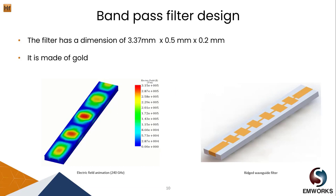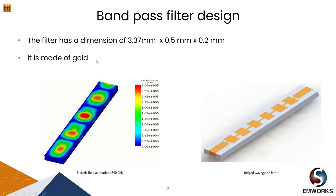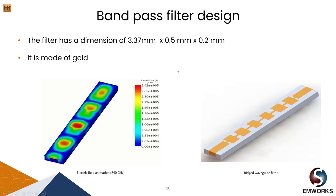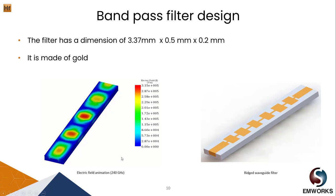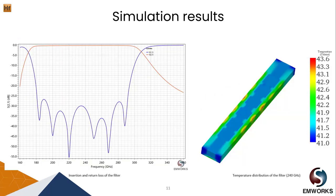Now let's look at the band pass filter. The filter is again physically small and made of gold. On the right we have a picture of the ridge waveguide filter, and on the left we have an animation of the electric field. Looking at the graph, the filter has a wide bandwidth of almost 120 gigahertz and a passband from 180 gigahertz up to 300 gigahertz.